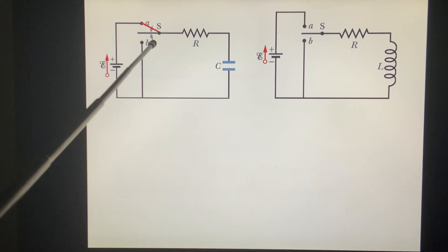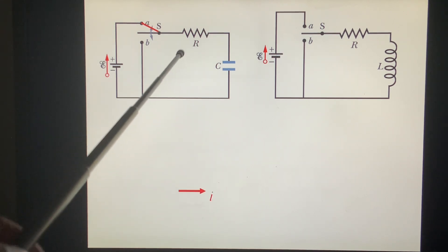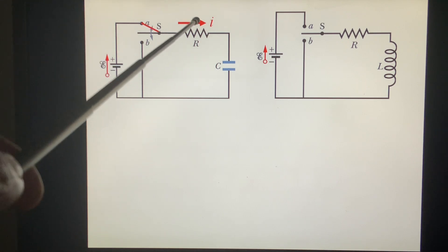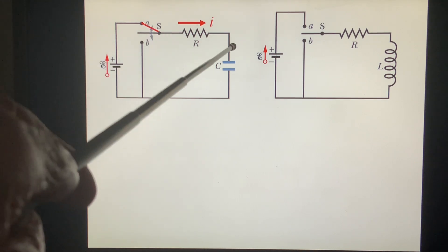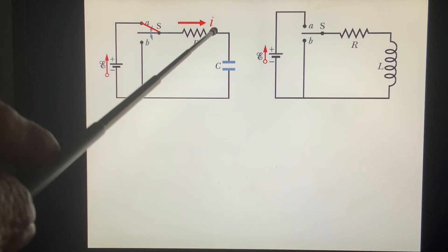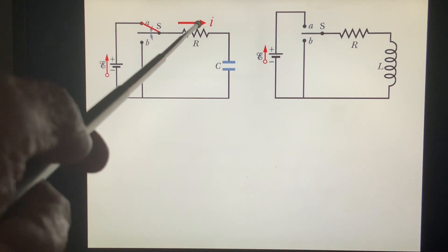First, we switch to connect to the electromotive force and we assume the current in this direction. It doesn't matter which direction you assume. After you solve the differential equation, if I is a positive number, that means this direction. If I is a negative number, that means the real I is in the other direction. So we assume I is this direction.